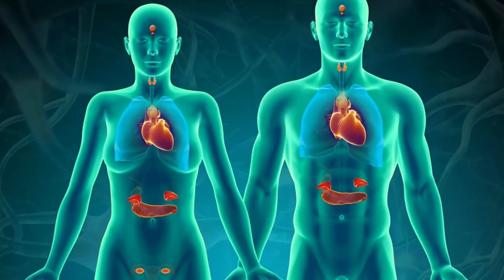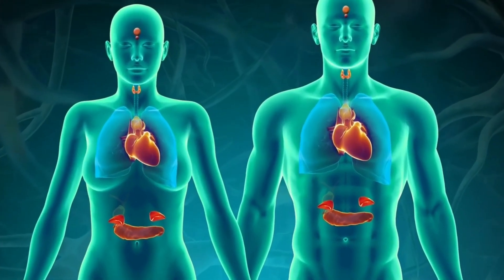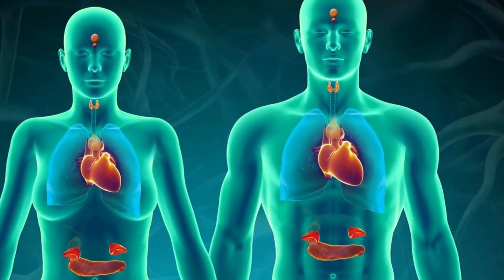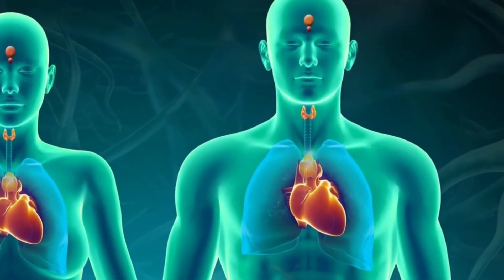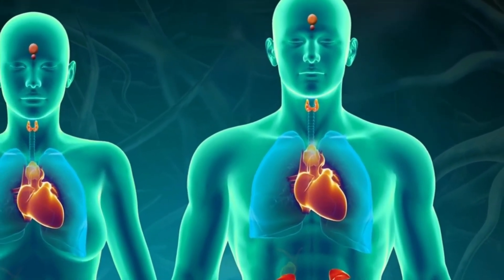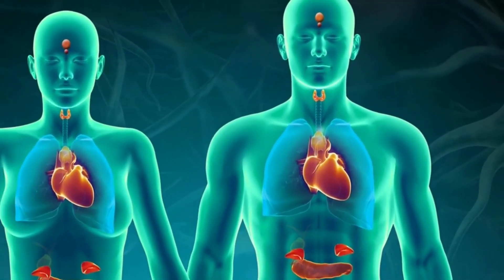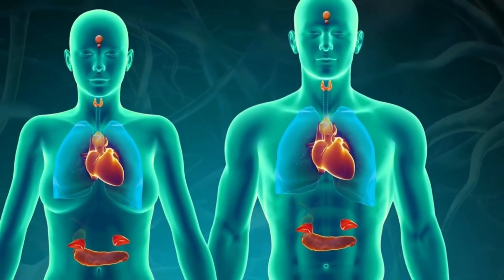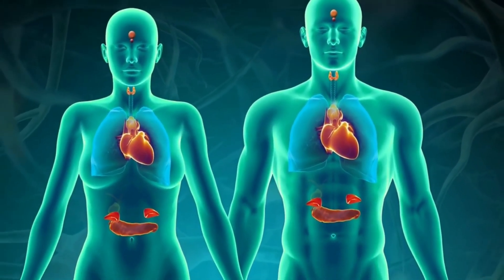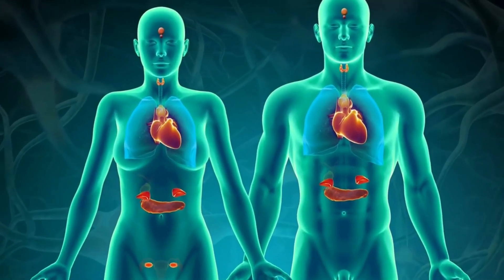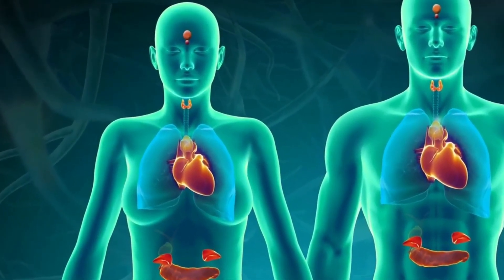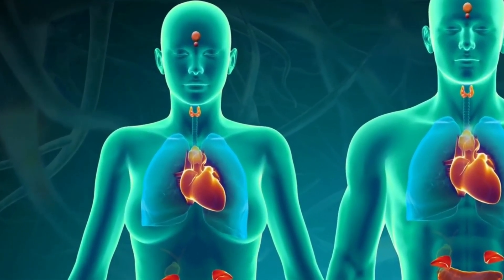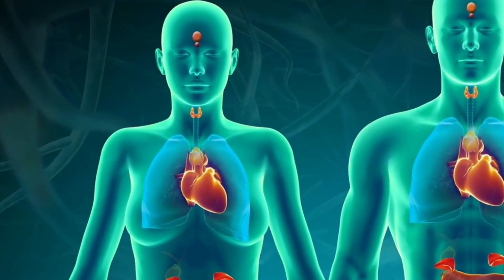The endocrine glands are divided into two parts: central gland and peripheral gland. The central gland includes the hypothalamus, pituitary, and pineal gland. While the peripheral glands include the thyroid, parathyroid, adrenal, gonads, pancreas, and thymus.